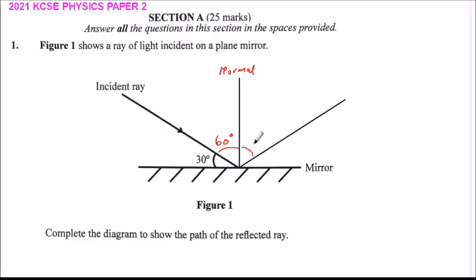This angle is 60 degrees, or you can measure the 30 degrees because you will be left with the 60. So those are the angles. This is the reflected ray. With that, you will be able to score one mark. That's how you answer that question.